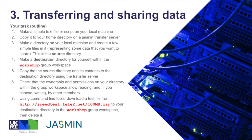Here's an overview of our task. You're going to make a simple text file or script on your local machine and copy it to your home directory on a Jasmine transfer server. Then make a directory on your local machine and create a few simple files in it representing some data that you want to share — this is your source directory. Then make a destination directory for yourself within the workshop group workspace, and copy the source directory and its contents to the destination directory using the transfer server. Check that the ownership and permissions on your directory within the group workspace allow reading, and if you choose, writing by other members of the same workspace.